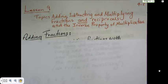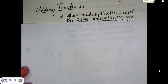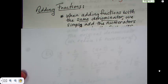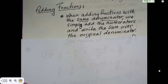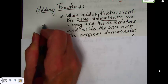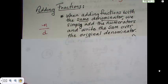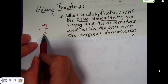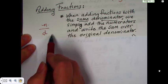To start with, we're just going to spend a little time talking about adding fractions. Now, when we're adding fractions with the same denominator, we simply add the numerators and write the sum over the original denominator. So, if you're adding and this denominator is the same on both fractions, you're just going to add the numerators together and put it over that denominator.